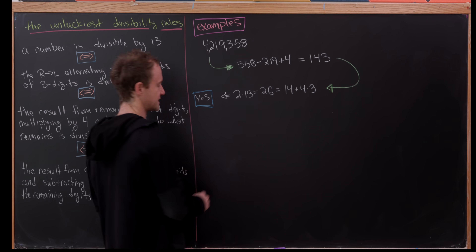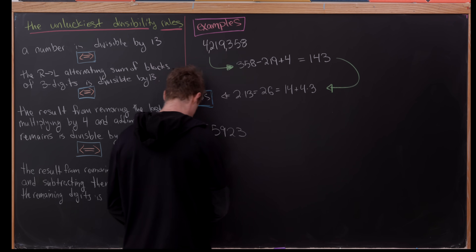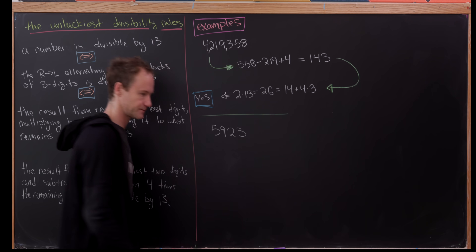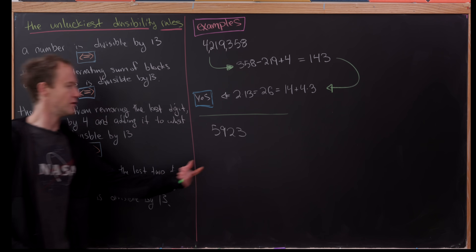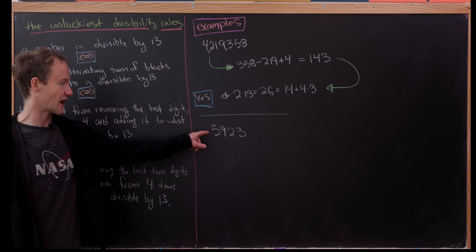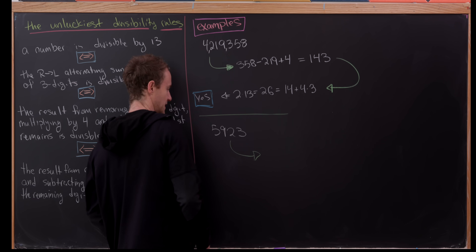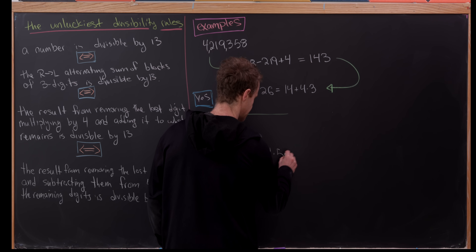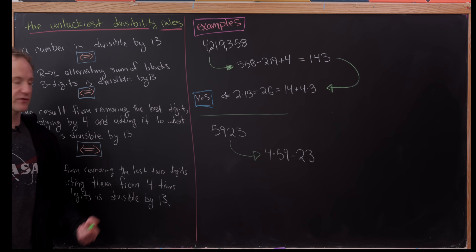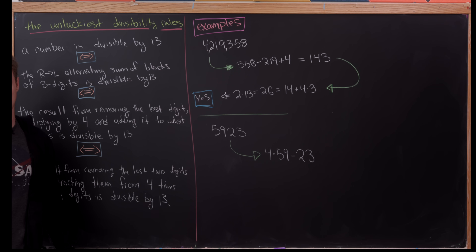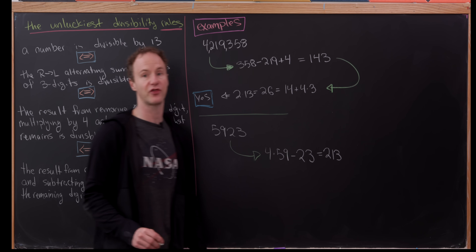Let's do another example with the number 5,923. Here we'll start with the third rule — remove the last two digits and subtract them from four times the remaining digits. So we take four times 59 and subtract 23, because if you remove 23, what remains is 59. Doing that calculation gives us the number 213.